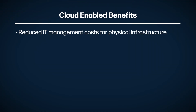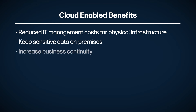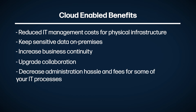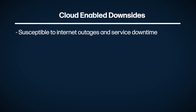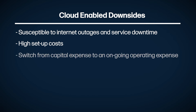Cloud enabled benefits include reduced cost of managing on-premises physical IT systems. You can keep components like data storage in a secure on-premise environment, increase your business continuity, upgrade your collaboration, and reduce administration hassle for some of your IT processes. Cloud enabled cons include: if something goes down on the physical side, the cloud will have trouble communicating with it, making it susceptible to internet or service outages. It's costly to configure, you enter an ongoing cost model, and it can be complicated to manage the costs.